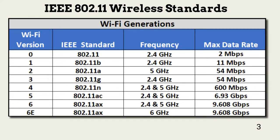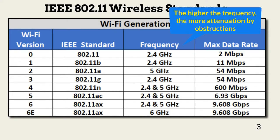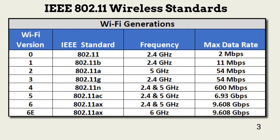Let's first look at the IEEE 802.11 standards, which are commonly used for home and business wireless networks. This table shows the different standards, associated bandwidths, and frequency. Frequency is an important consideration when managing how far a device can be from a wireless access point, or WAP, and still communicate efficiently. Each standard uses one of three transmission standards that enable different data rates for the same frequency.